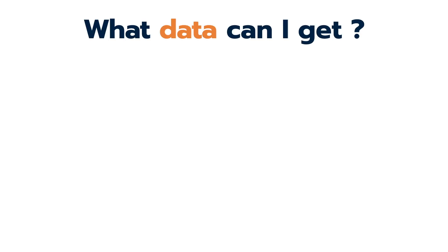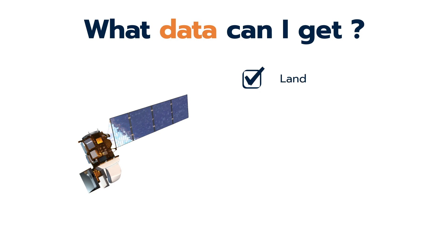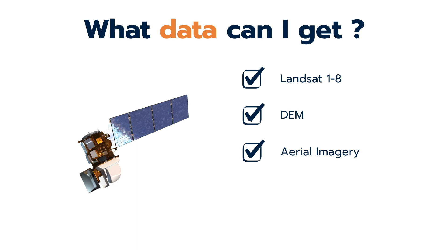What data can we get from the USGS website? 1. Landsat 1 and 2, Landsat 8. 2. Digital Elevation Model. 3. Aerial Images. 4. Radar. And the last, there are many other datasets on this website, such as LandCover and MODIS.